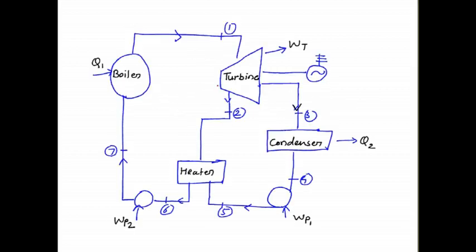This is the flow diagram of the regenerative cycle. With the help of this diagram, we can easily understand the concept and working of the regenerative cycle. If we consider 1 kg of steam enters into the turbine, during the isentropic expansion in this turbine, some amount of steam is extracted from the intermediate stage of the turbine. Some amount of steam will partially expand into the turbine. If we take M amount of steam which partially expands into this turbine at pressure P2, this partially expanded steam will transfer to the heater.